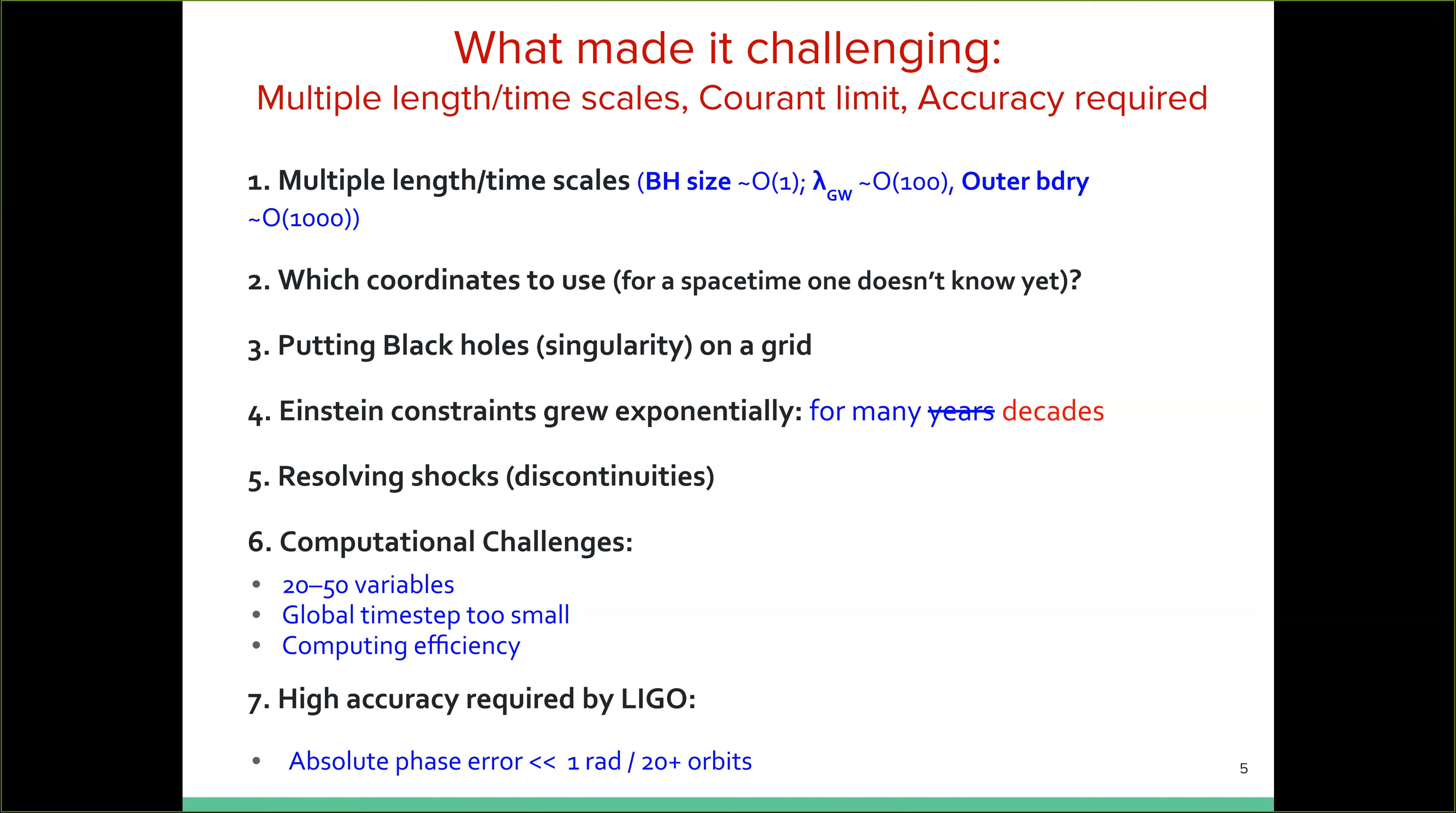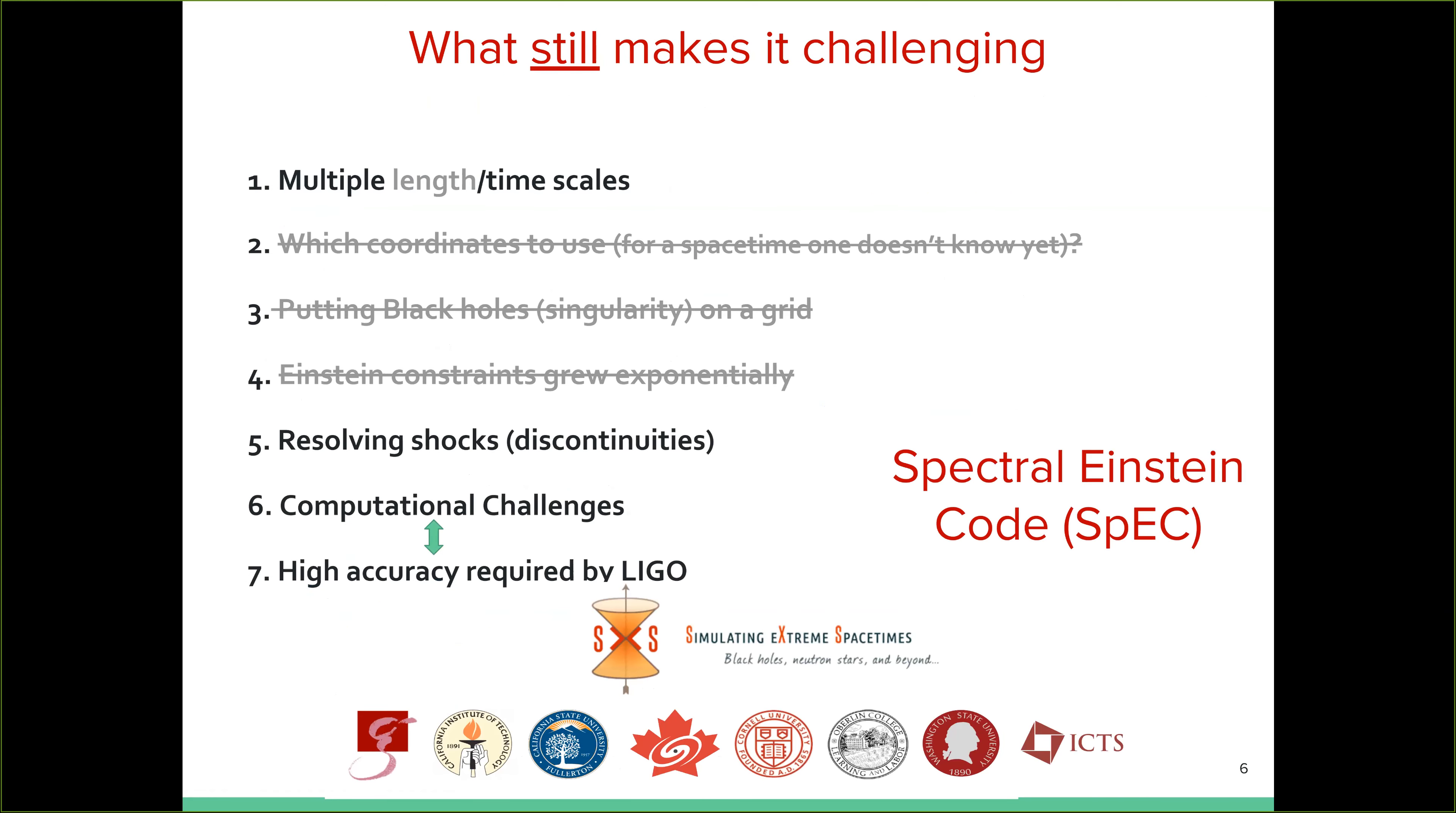And finally, all of these challenges, they tie into the fact that the solution required by LIGO has to be quite accurate to the phase errors that was allowed was less than one radian in more than 20 orbits, which is not the easiest thing to get. But a lot of these challenges have actually been overcome already. So at this point, I wanted to introduce our original first code that made the two movies that I showed you earlier. This was called the spectral Einstein code.